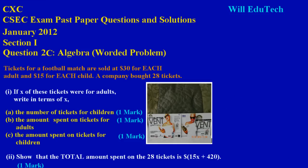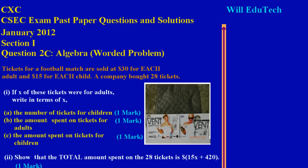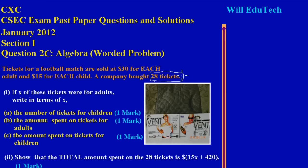Let me just split the screen a bit. Now if X of these tickets, as they have stated, were for adults, and they're asking us to write in terms of X the number of tickets for children, let's look at the basic concept behind this first before we write the expression. They gave us a total amount of tickets — 28 tickets were distributed. Now the adults got X amount of the tickets, some portion of these 28 tickets. We don't know how many.